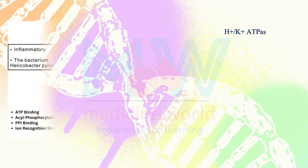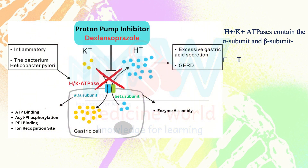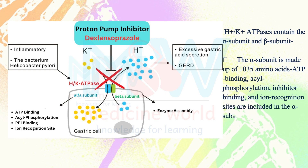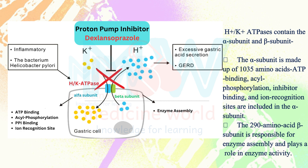Hydrogen-potassium ATPase contains an alpha subunit and a beta subunit. The alpha subunit is made up of 1035 amino acids; ATP binding, acyl phosphorylation, inhibitor binding, and ion recognition sites are all included in the alpha subunit. The 290 amino acid beta subunit is responsible for enzyme assembly and plays a role in enzyme activity.